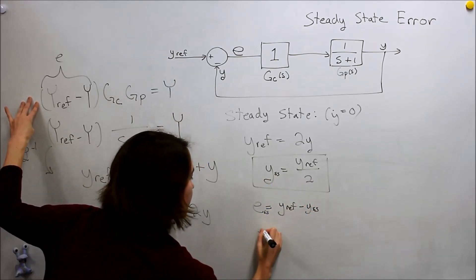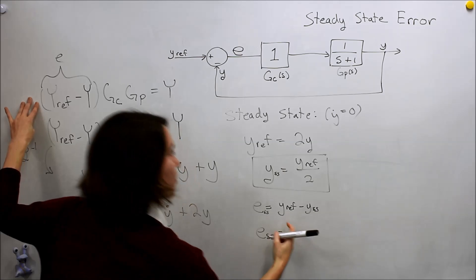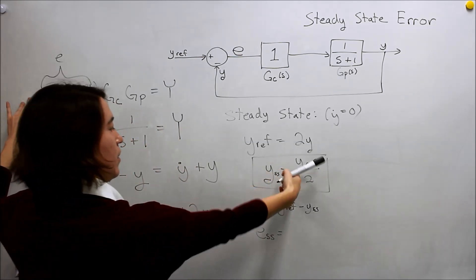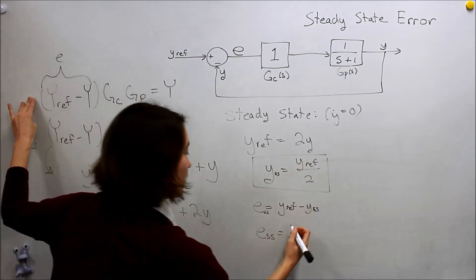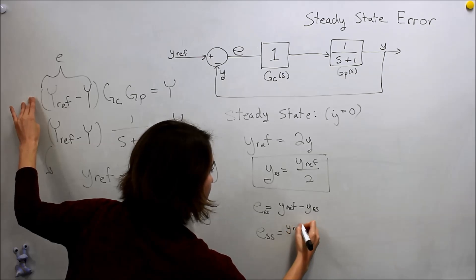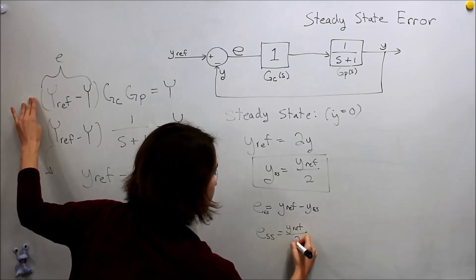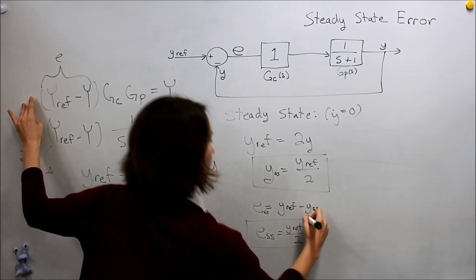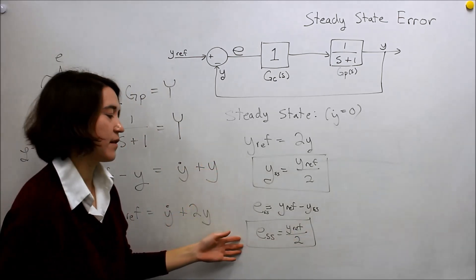If we just plug that back in there, we'll see that our error steady state is just going to be equal to y_ref minus 1 over 2, which is again y_ref over 2. These would be our steady state y value and our steady state error.